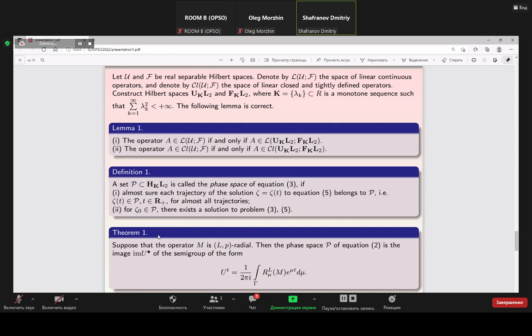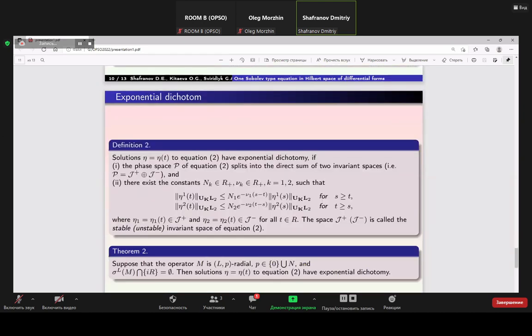Theorem one: suppose that the operator M is Lp radial. Then the phase space pair of equation 2 is the image M0 supplement 0 of the semigroup of the form like this. We not only try to understand solvability of Cauchy problem for Ginzburg-Landau equation.